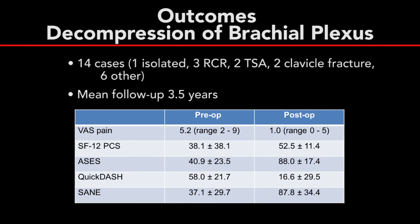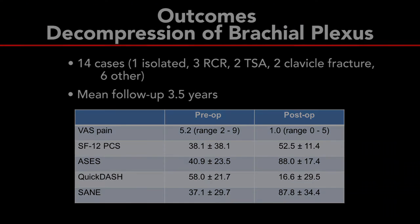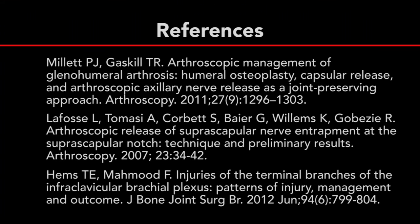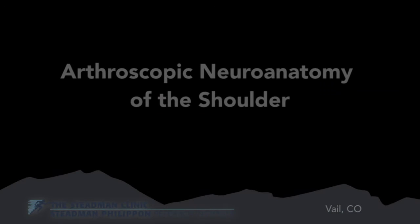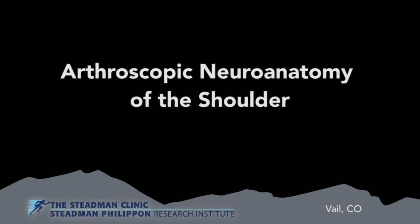Finally, 14 patients who underwent brachial plexus decompression also reported overall improvement for all outcome scores, with an average follow-up of 3.5 years. This concludes the arthroscopic neuroanatomy of the shoulder with arthroscopic techniques for decompression.